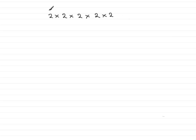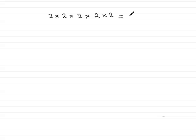Hi. Now quite often you're going to find yourself coming across repeated multiplication. For instance, in this example I've got 2 repeatedly multiplied by itself 5 times over. If we have statements like this, there is a shorthand way of writing them, and it is like this. We say that this is 2 to the power 5, written with the 2 here and a little 5 up here in the top right. 2 to the power 5.